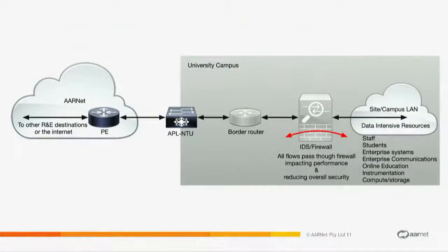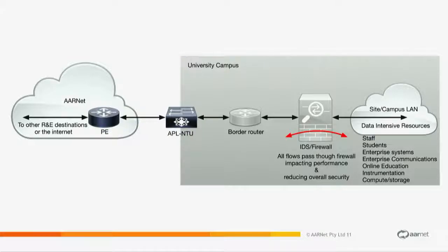Different models. This is what a university campus network simplified looks like: you've got your R-Net, your NTU, your border router, IDSs, firewalls, inline security devices. Those are the things that keep our user community safe — and a lot of the time keep people outside our community safe from inside the university. Really tough to traverse that firewall, especially when you've got things like GridFTP where a scientist says, I want to use GridFTP.